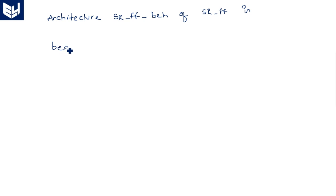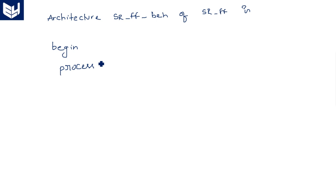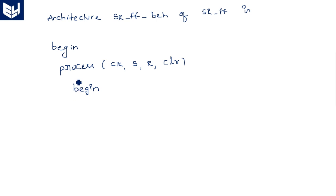After 'is', give some space in case you need to declare any signals; otherwise just proceed to begin. We should use a process statement inside the behavioral model. Process sensitivity list includes: clock, S, R, clear. Process should begin — remember, however many begins you open, that many ends you must close.